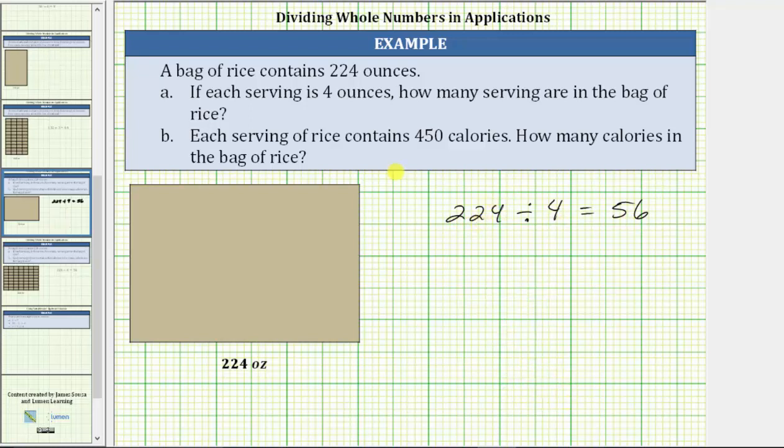As a complete sentence, there are 56 four-ounce servings in the bag of rice.